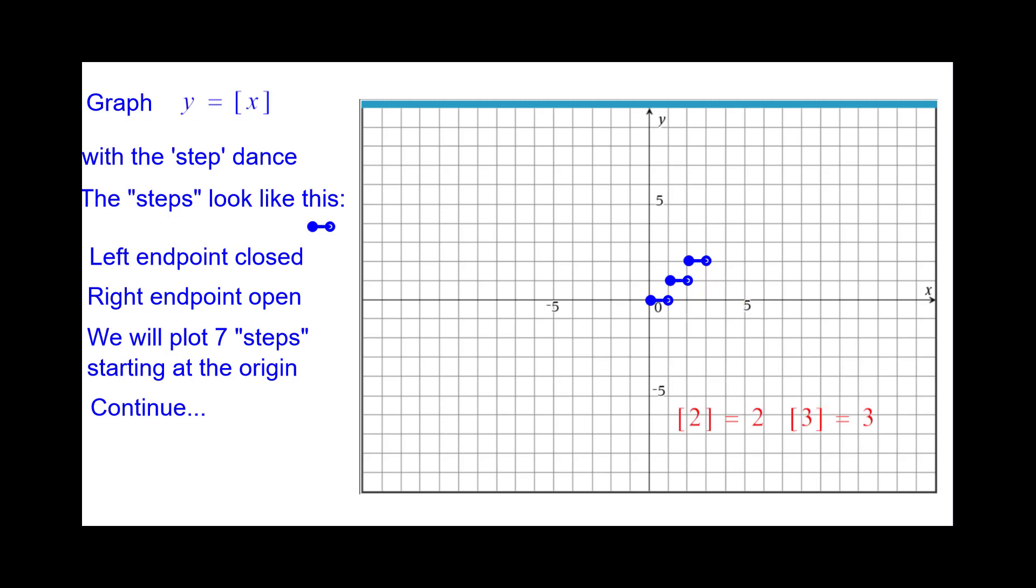Similarly, greatest integer of 2 is 2, so we get a step there, and then another step there. Then going in the negative direction.